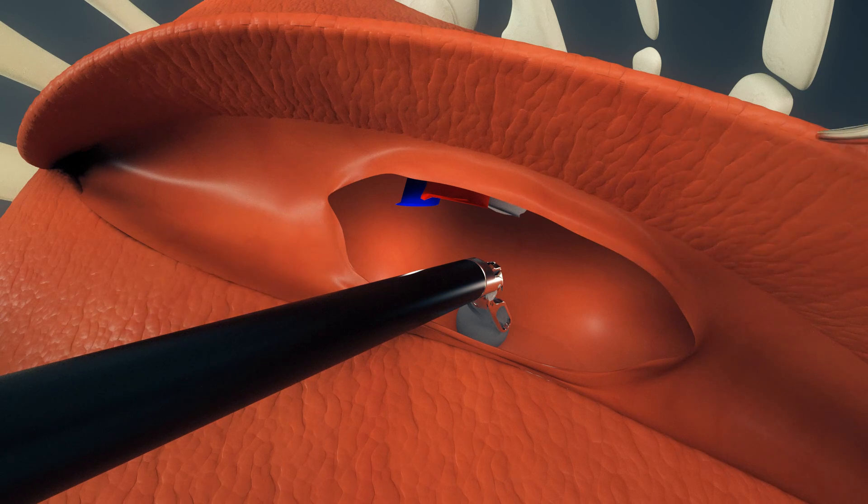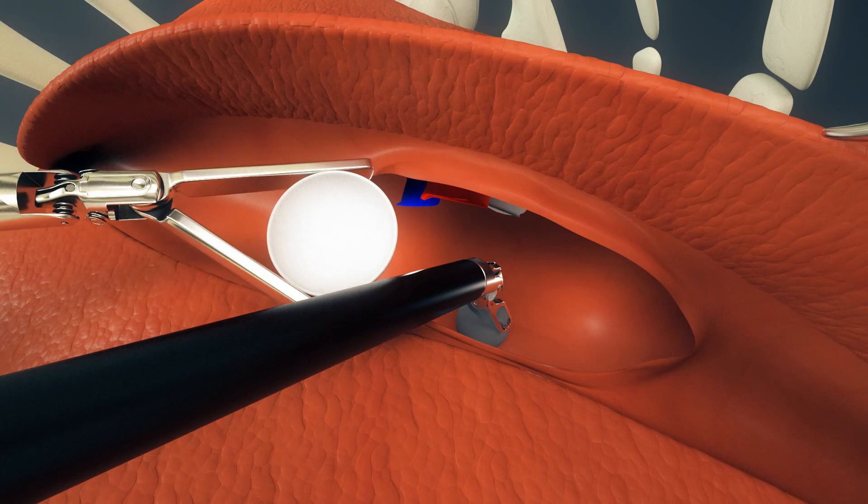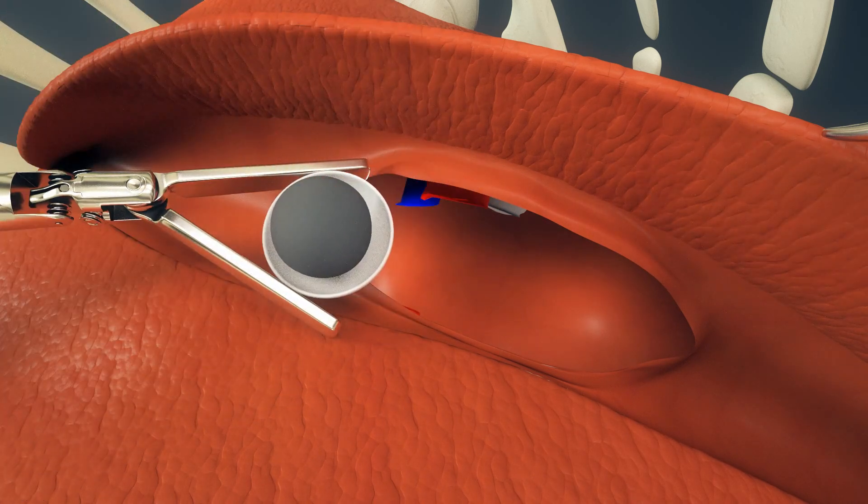After the lobe is detached, it is placed in a special bag and removed through one of the incisions. A drain is placed and the remainder of the incisions are closed and dressed.